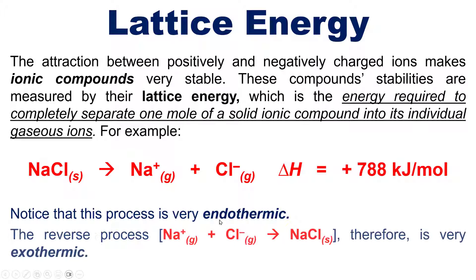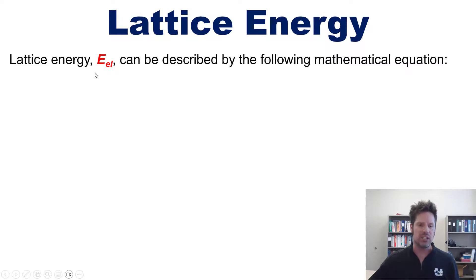It should make sense then that the reverse process, combining these ions together to make sodium chloride salt, will be very exothermic by the exact same amount, just with the reverse negative sign.